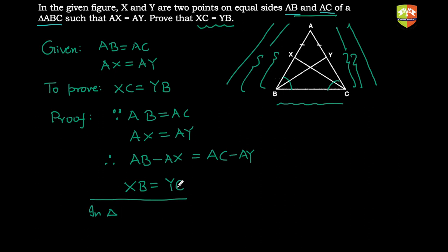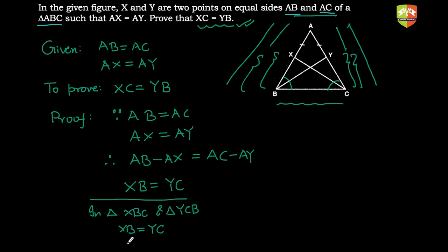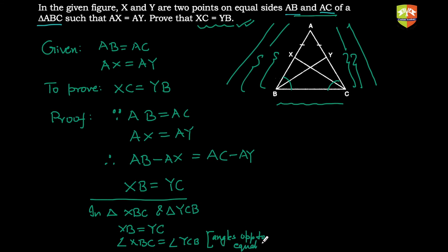Now we identify the two triangles of which the required sides XC and YB are parts. In triangle XBC and triangle YCB: first, XB equals YC (proved above); second, angle XBC equals angle YCB, because these are angles opposite to equal sides in a triangle (since AB = AC).